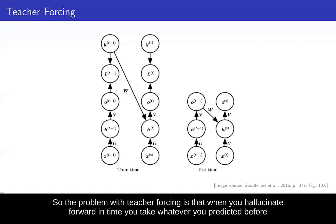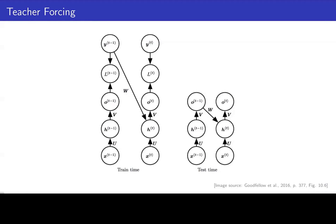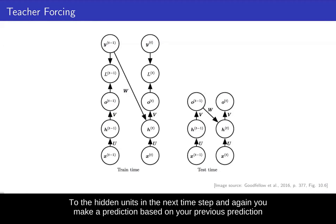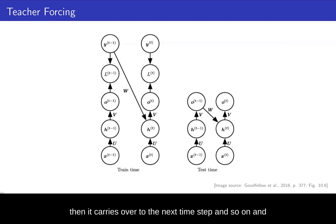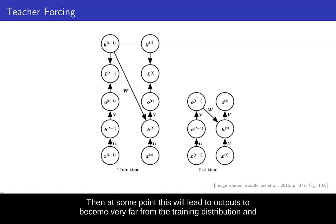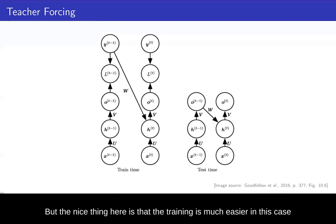The problem with teacher forcing is that when you hallucinate forward in time, you take whatever you predicted before to the hidden units in the next time step. And again, you make a prediction based on your previous prediction. Then you can start to accumulate these errors because you make some errors in one time step and it carries over to the next time step and so on. And then at some point, this will lead to outputs to become very far from the training distribution and in turn become unstable. But the nice thing here is that the training is much easier in this case.